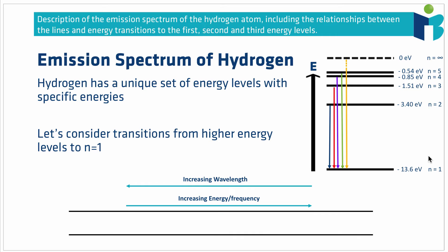Hydrogen has a unique set of energy levels, shown on the right. We go from our lowest energy level n equals 1 to n equals 2, n equals 3, all the way up to n equals infinity, which represents the edge of the atom. The energies of these levels are written as negative numbers because we think of the energy of electrons in an atom as an energy debt — energy that would need to be supplied to free them. That's why our last energy level is written as zero electron volts, our baseline for a free electron. These energies are given in electron volts, convenient units for this scale.